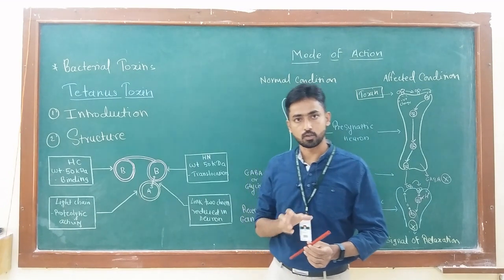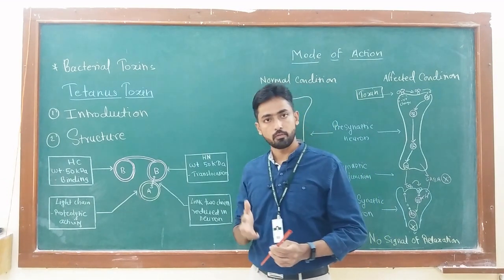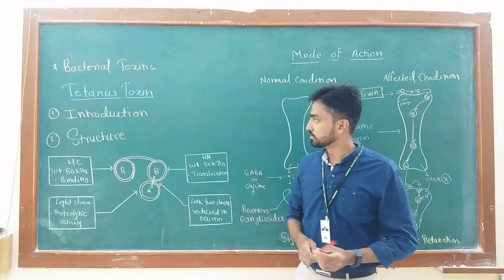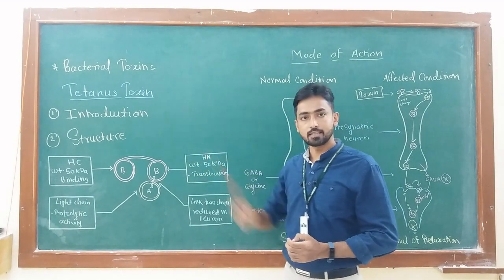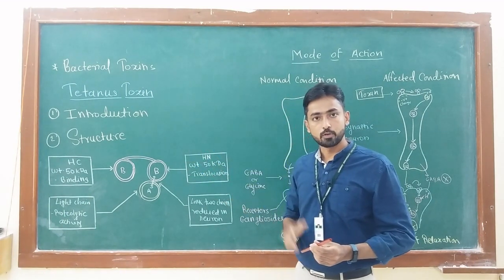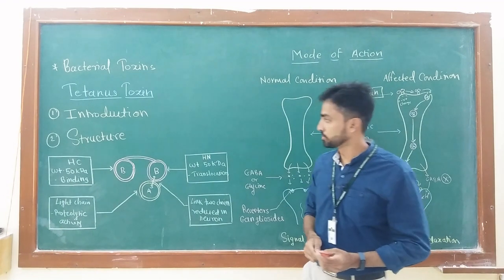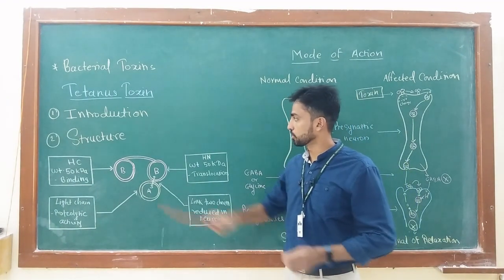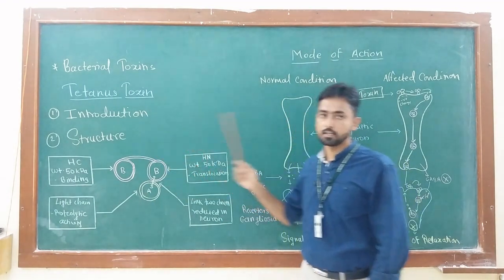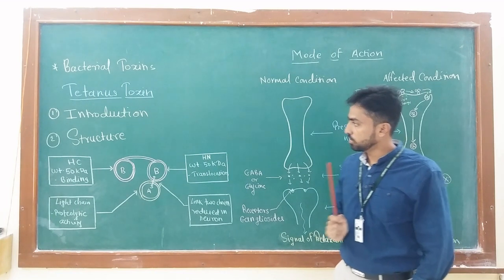Likely this test was conducted on rats so the value may vary when we consider humans. The toxin is also called spasmodic toxin because it induces spastic shocks. In this lecture I am going to focus on structure of this toxin and its mode of action.